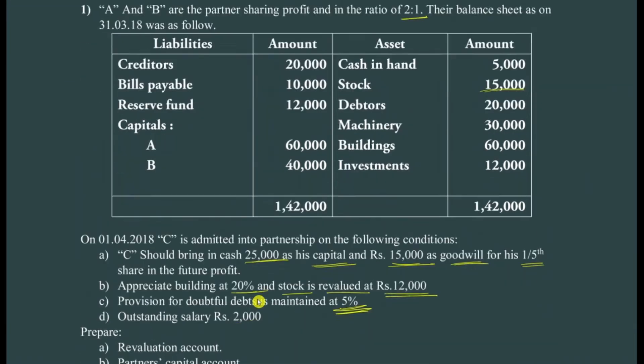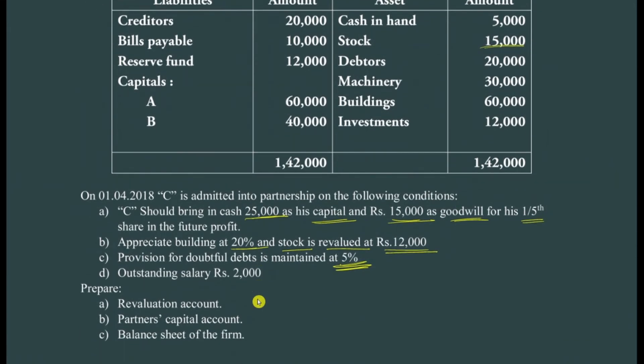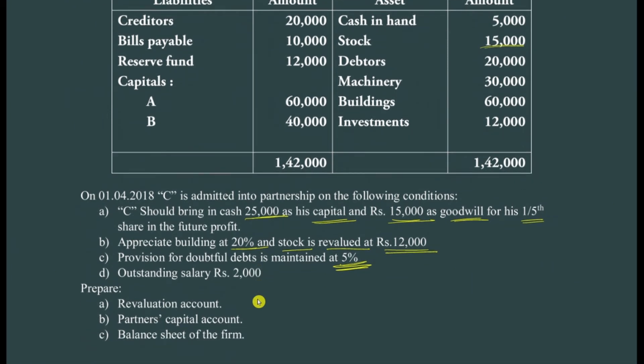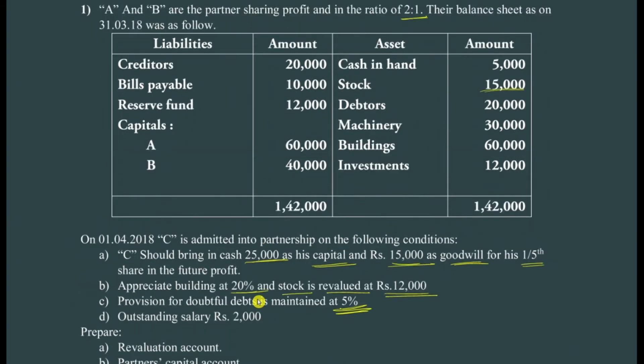We have to create the revaluation account, partners' capital account, and the balance sheet. When a new partner is admitted, some assets may decrease and some may increase — that's why we go through the revaluation account. Next, to share the profit or loss among the partners, we need to create each partner's capital account, and finally prepare the balance sheet.